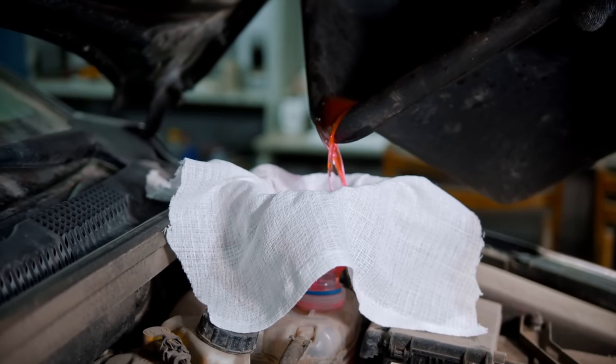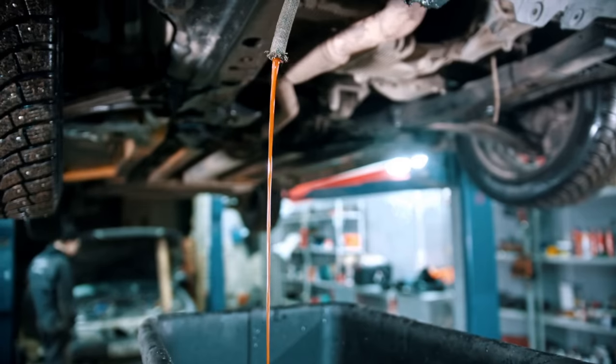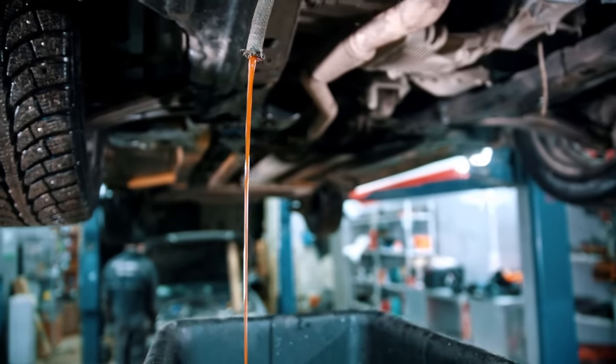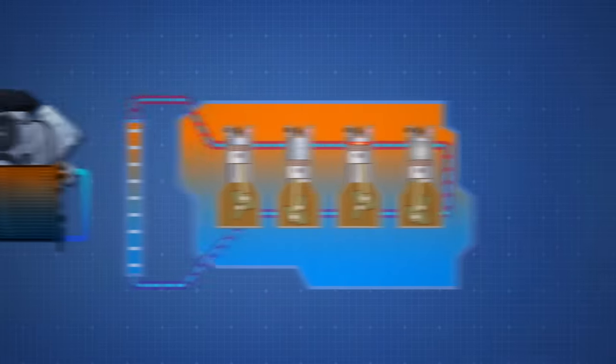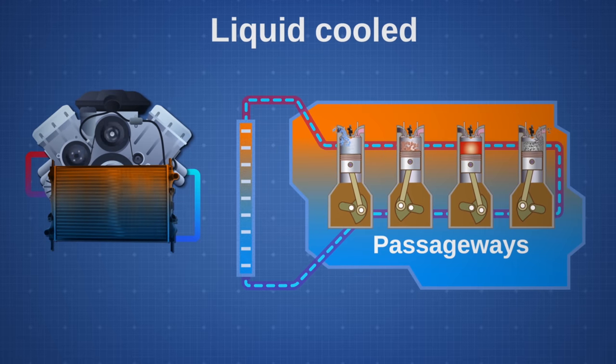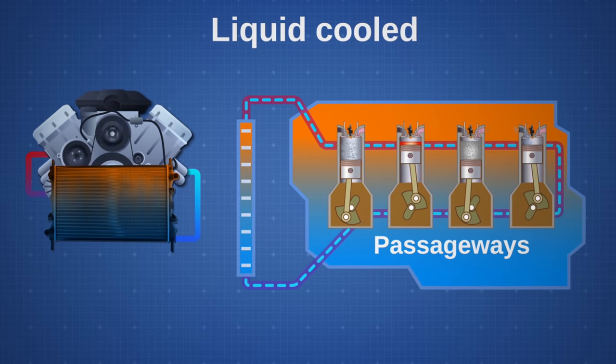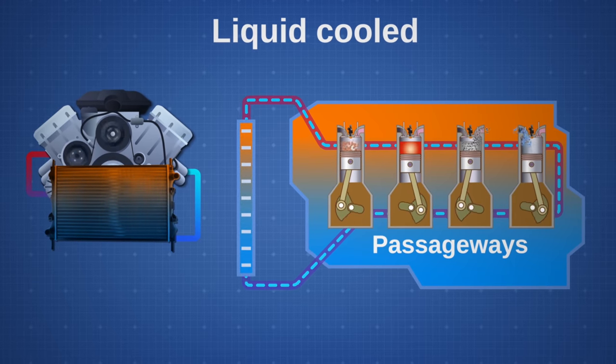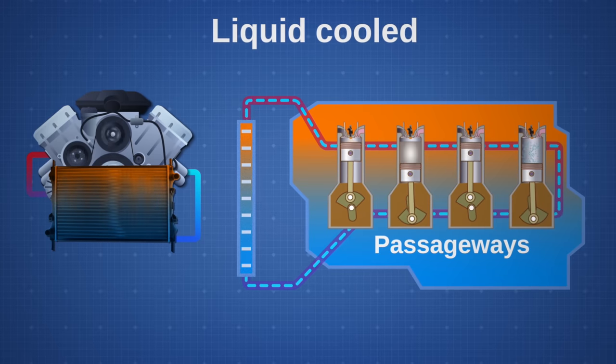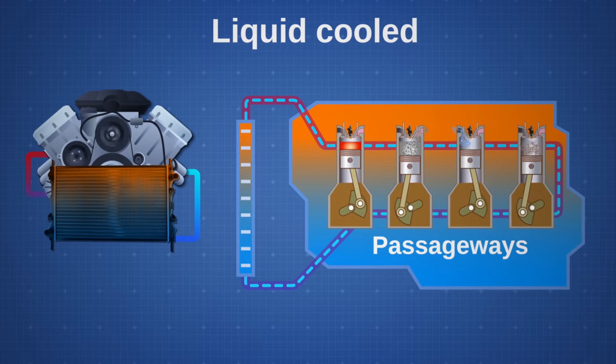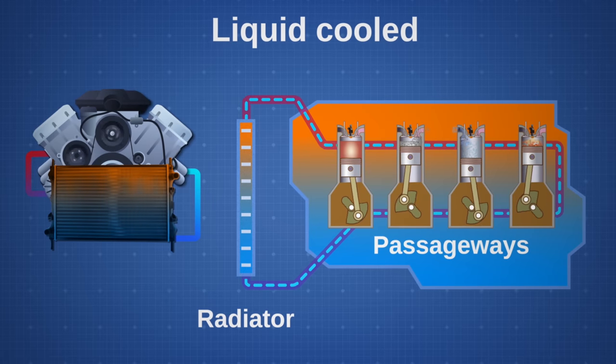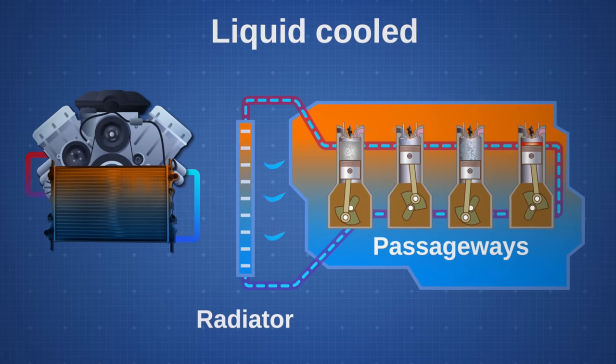But nowadays most modern cars and trucks with internal combustion engines use the liquid cooled method. A fluid circulates through pipes and passageways inside the engine. As this liquid passes through the hot engine, it absorbs heat, thereby cooling the engine. After the fluid leaves the engine, it passes through a heat exchanger or radiator, which transfers the heat from the fluid to the air blowing through the exchanger.